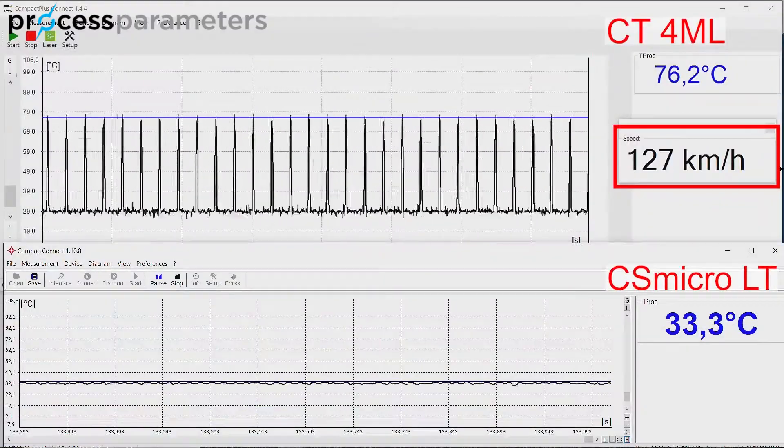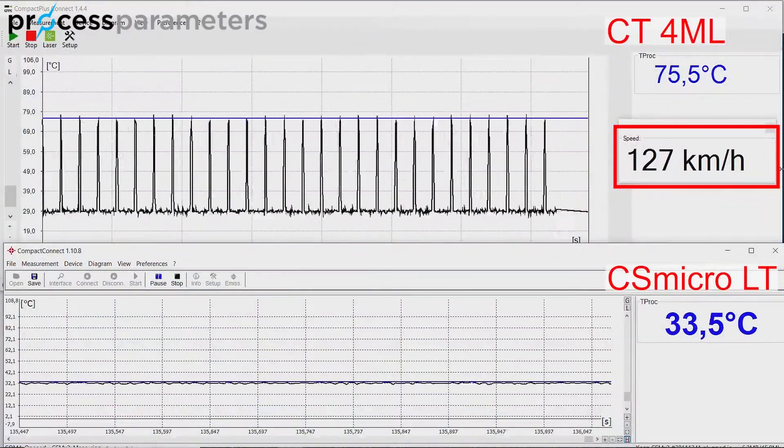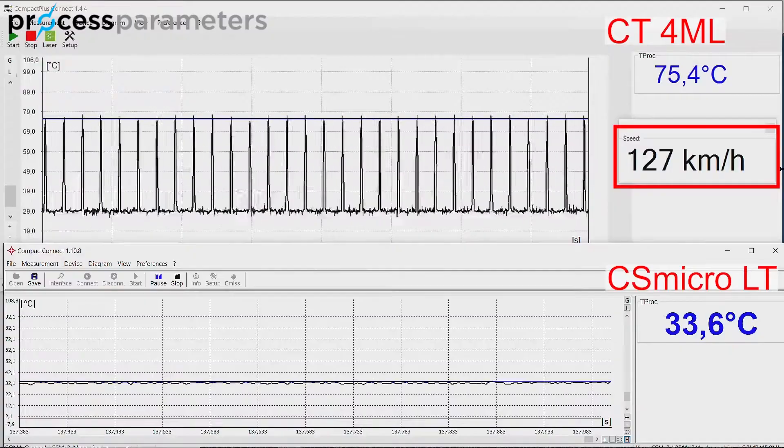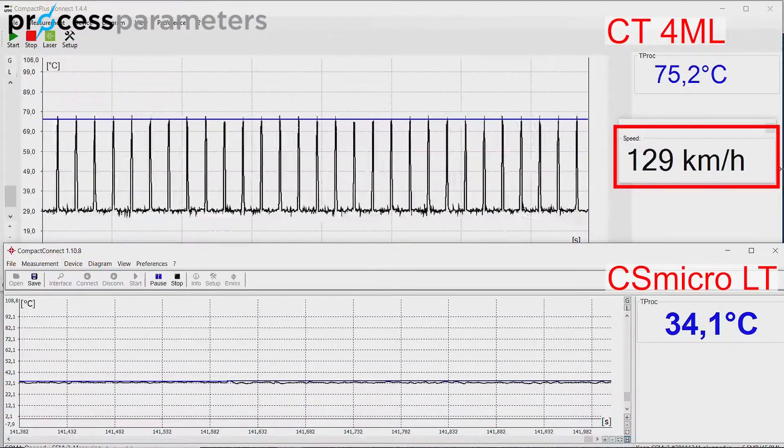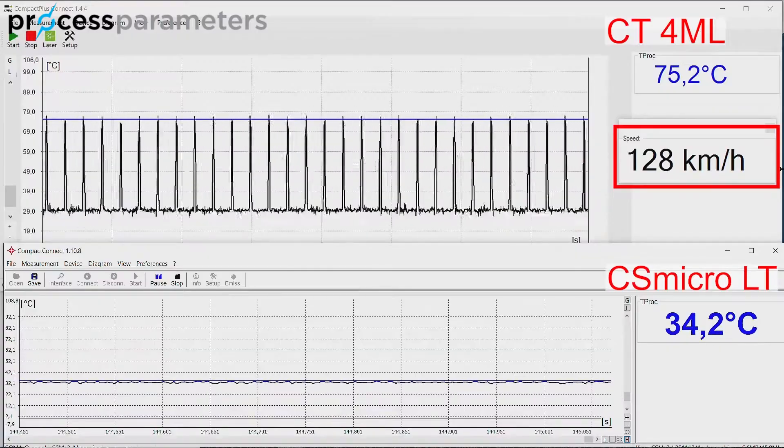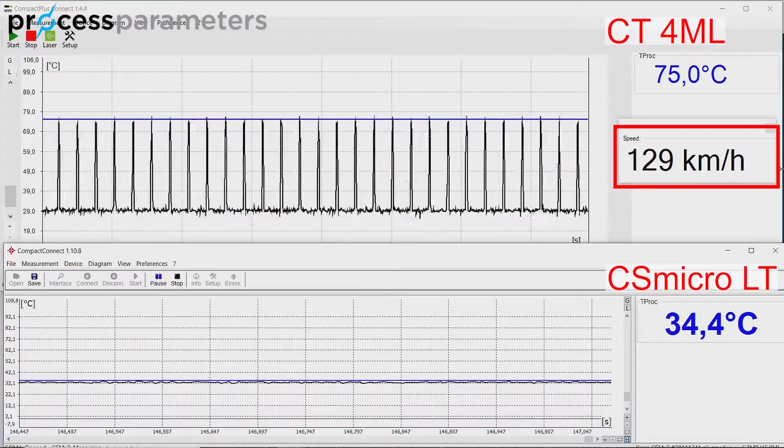With this speed, the CSMicro sensor, which has an exposure time of 14 milliseconds, does not have any chance to get the correct temperature information. You can see the object temperature decreases to 34 degrees Celsius.